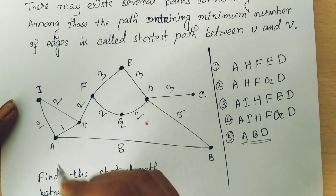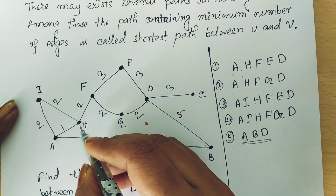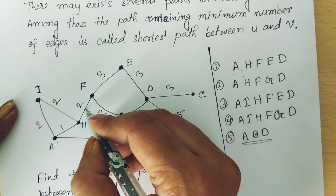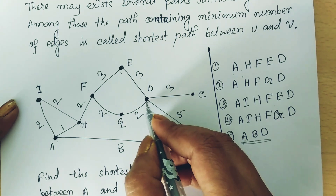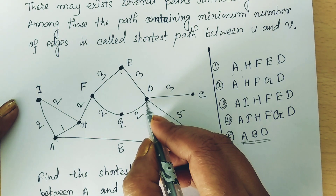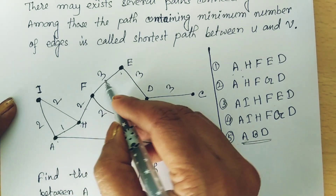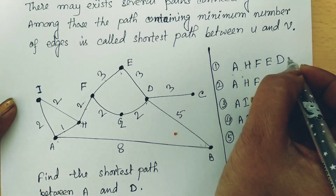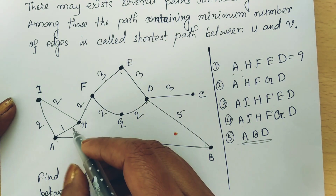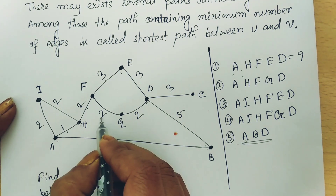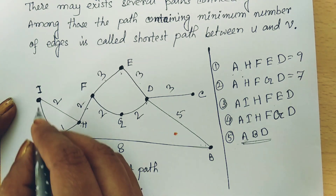After adding all those weights, we find the total weight of each path. Among all possible paths, the one with minimum weight is the shortest path. For the first path: A to H is weight 1, H to F is 2, F to E is 3, E to D is 3, so total weight is 9. For the second path, the weights sum to 7.